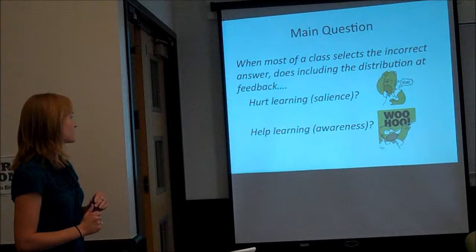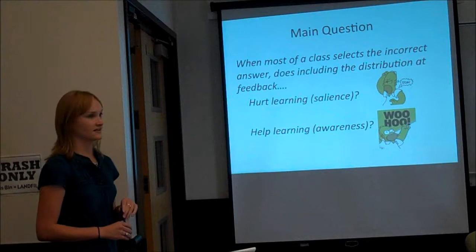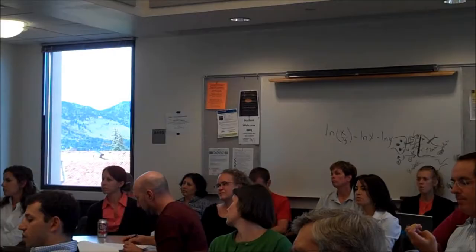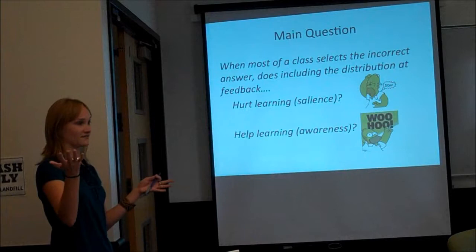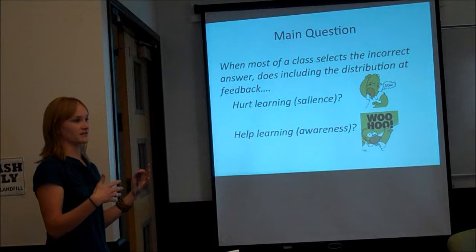According to our salience hypothesis, when the majority of people select one particular popular wrong answer, displaying the distribution may hurt their test performance. Alternatively, it could help their test performance if an awareness hypothesis were supported: highlighting the wrong answer may make them very aware of what the wrong answer is so they can avoid it in the future. Our main question was: when most of the class selects a particular incorrect popular answer, does including the distribution at feedback hurt learning according to the salience hypothesis, or help learning according to the awareness hypothesis? In our experiments, there's no discussion, but they do get the right answer on screen in addition to the graph.